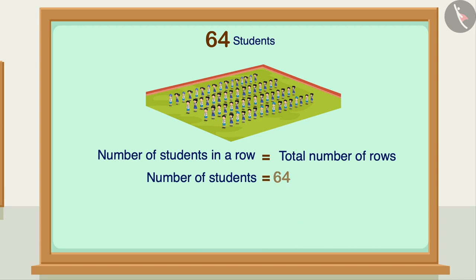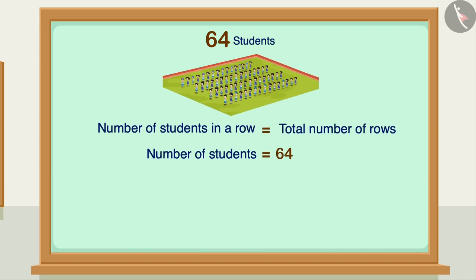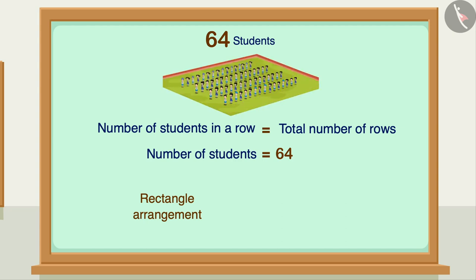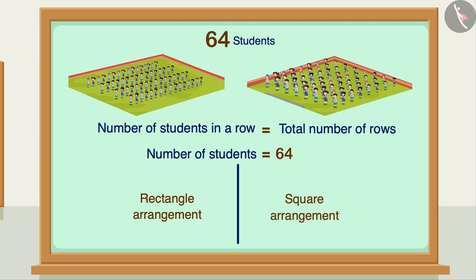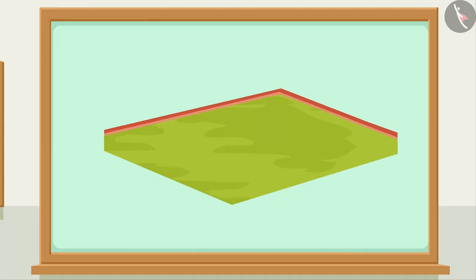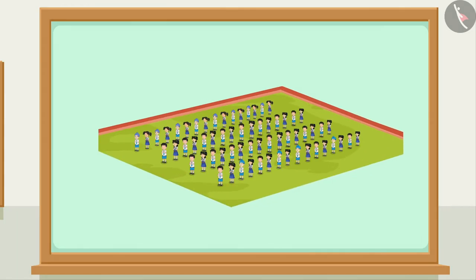Here the total number of students is 64. If the students stand in a rectangular form, then the total number of rows and the number of students in each row will not be the same. This can only be possible in a square structure. So in this case, how many rows should there be?